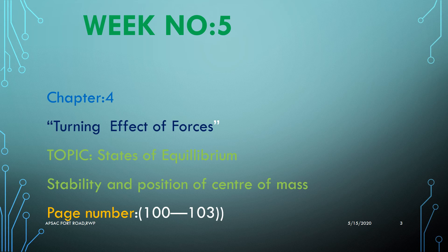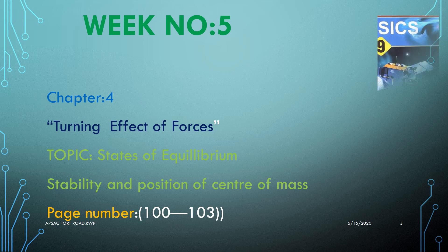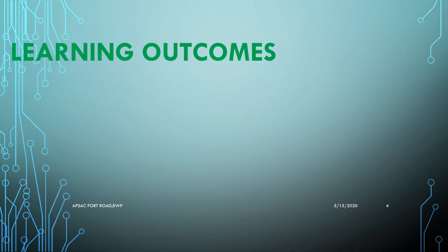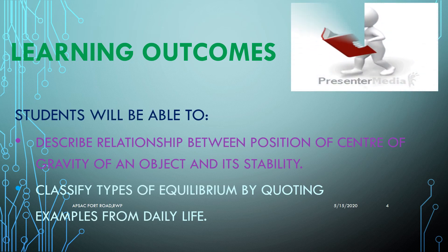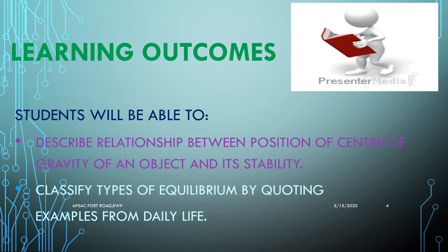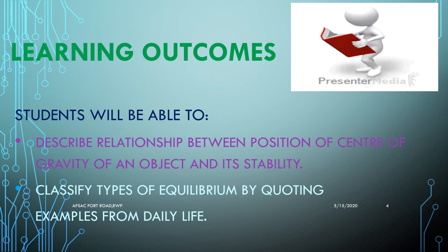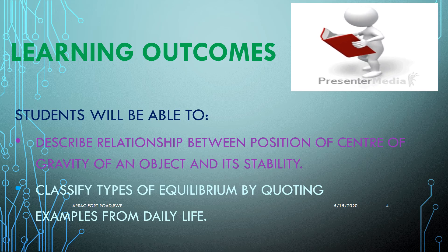These topics are given on pages 100 to 103 of your textbook. Understanding these topics will help students describe the relationship between the position of the center of gravity of an object and stability. It will also enable them to classify types of equilibrium by quoting different examples from day-to-day life.